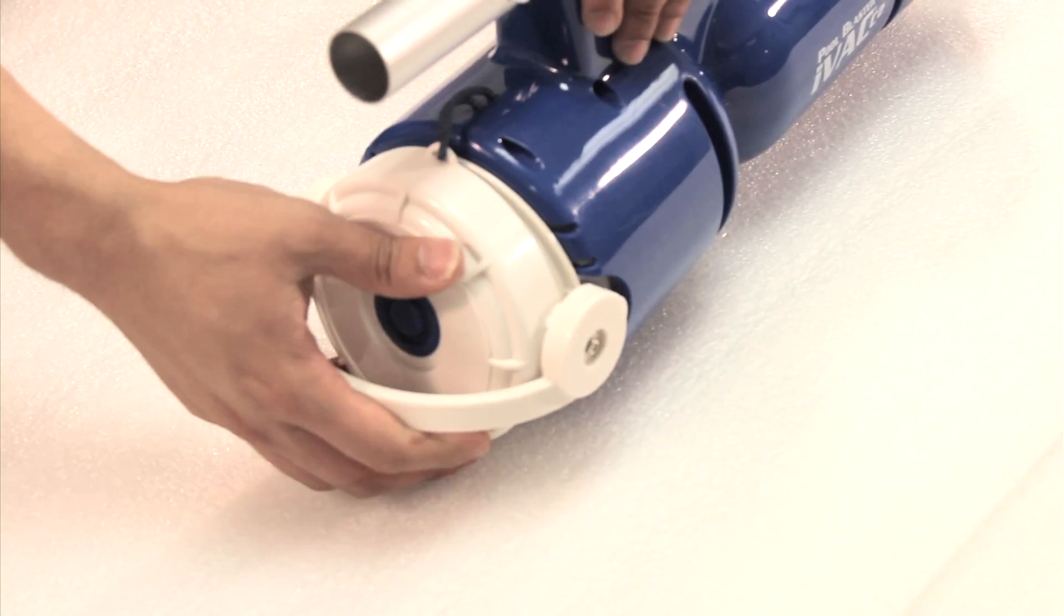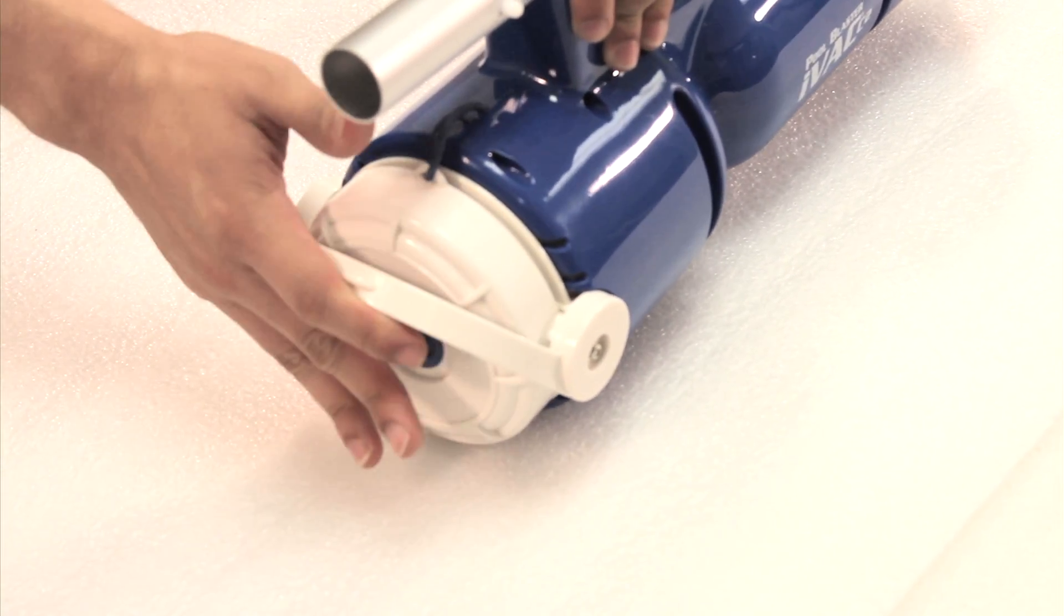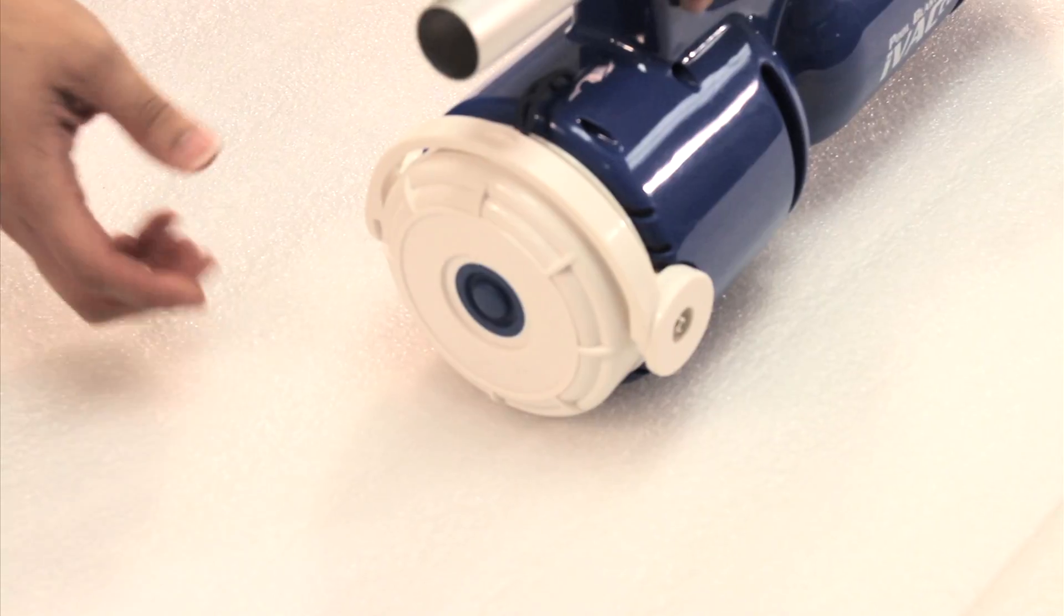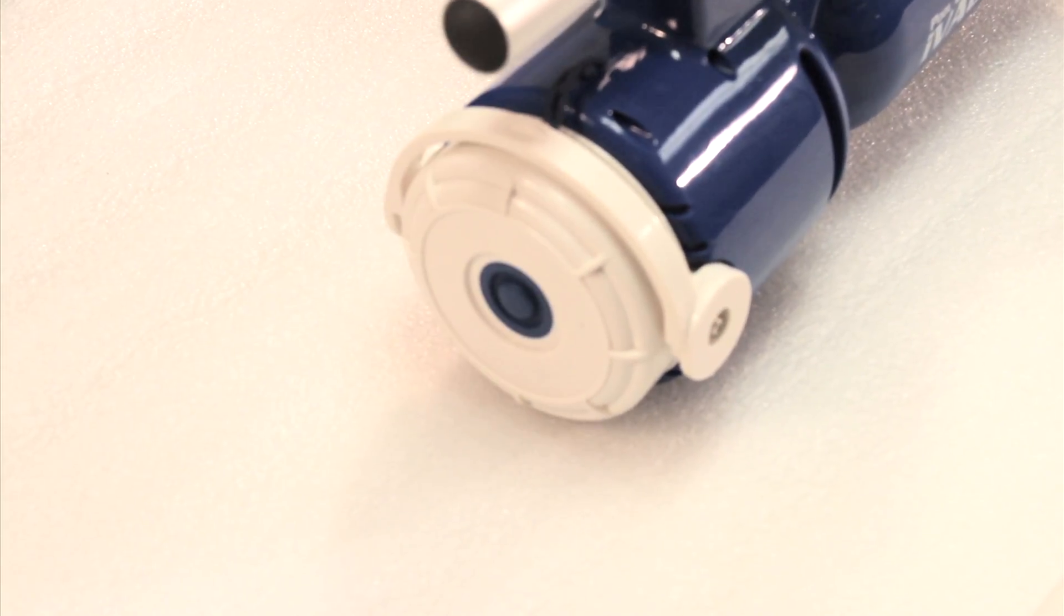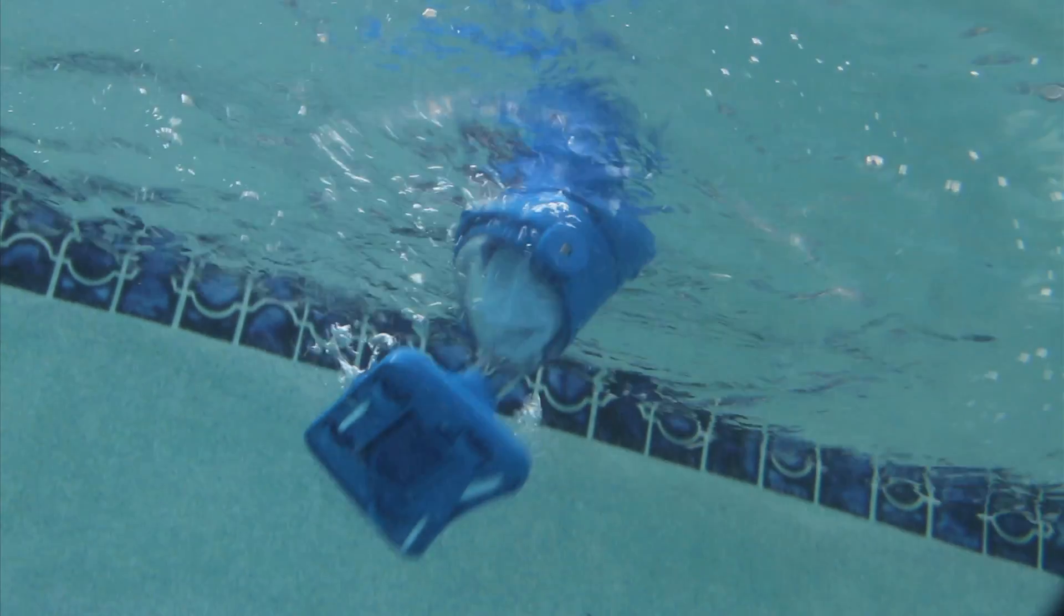Replace the easy snap locking cap to the vacuum. To turn the vacuum on, just press a button. To turn it off, press the button again. You should never run the vacuum out of the water.